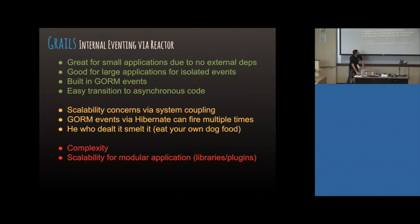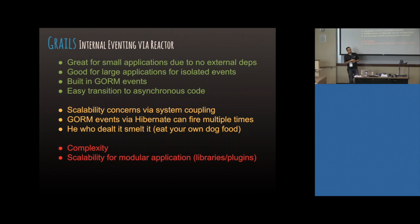Internal events are great for small applications with no external dependencies, and also for large applications when you have isolated events inside the system you don't need to parallelize or distribute. There are built-in GORM events — in the documentation you can see that when GORM operates in your application, it emits certain events like on save, on validate, on persist. All these events get emitted by GORM and you probably just haven't listened to them.